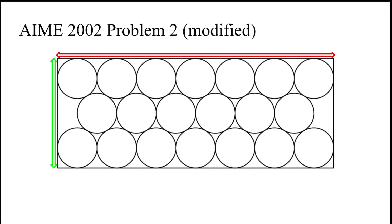This is a geometry problem from AIME 2002. There are 20 congruent circles arranged in three rows and enclosed in a rectangle. The circles touch each other and the sides of the rectangle as shown in the diagram. Find the ratio of the sides of the rectangle.